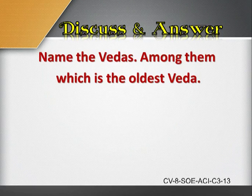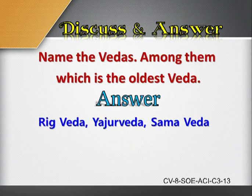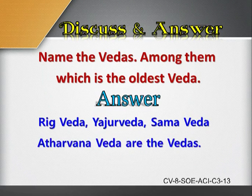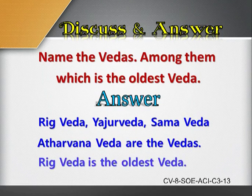The answer is: Rigveda, Yajurveda, Samaveda, and Atharvana Veda are the four Vedas. Among these, Rigveda is the oldest Veda.